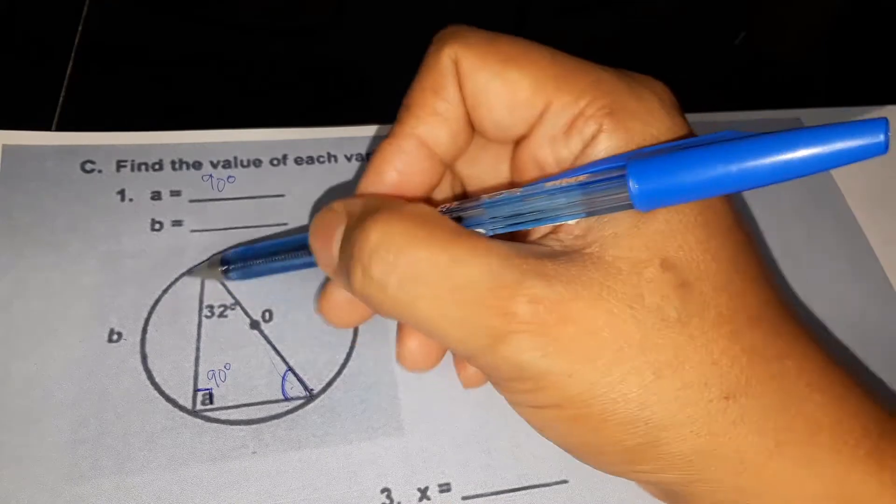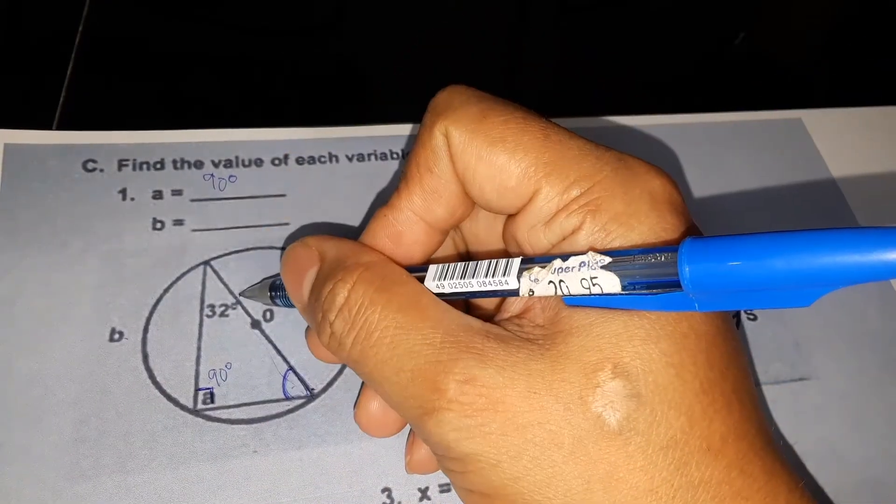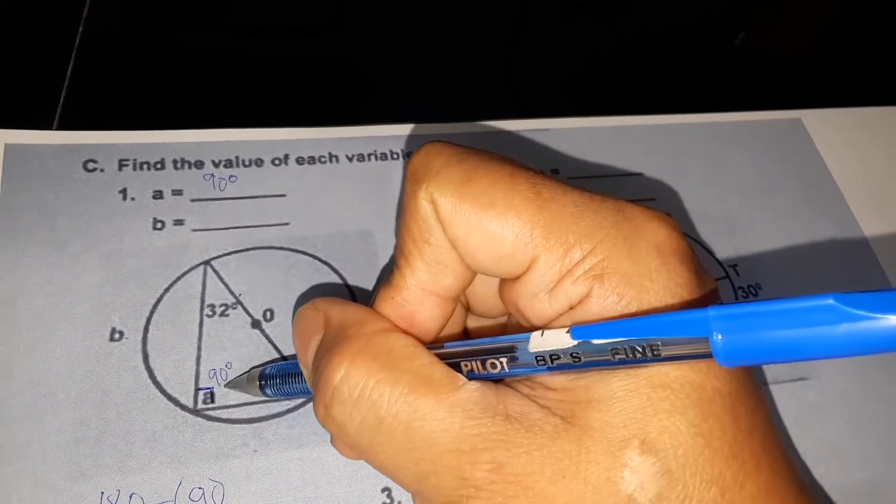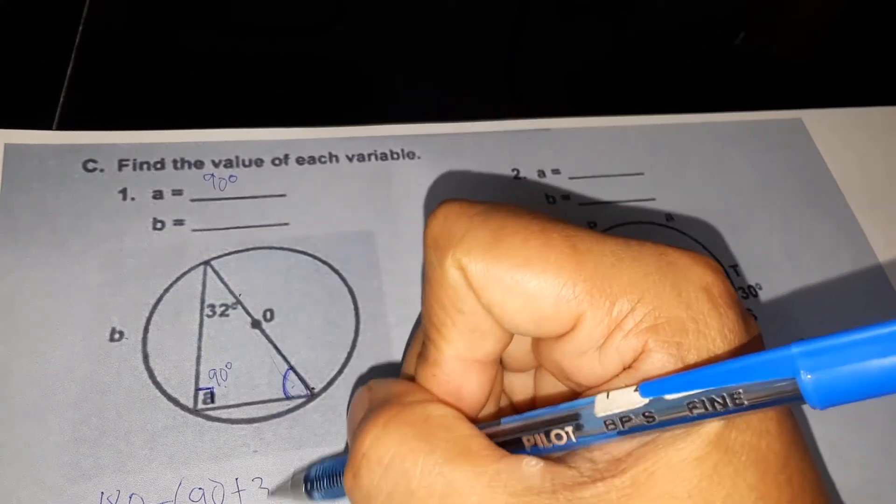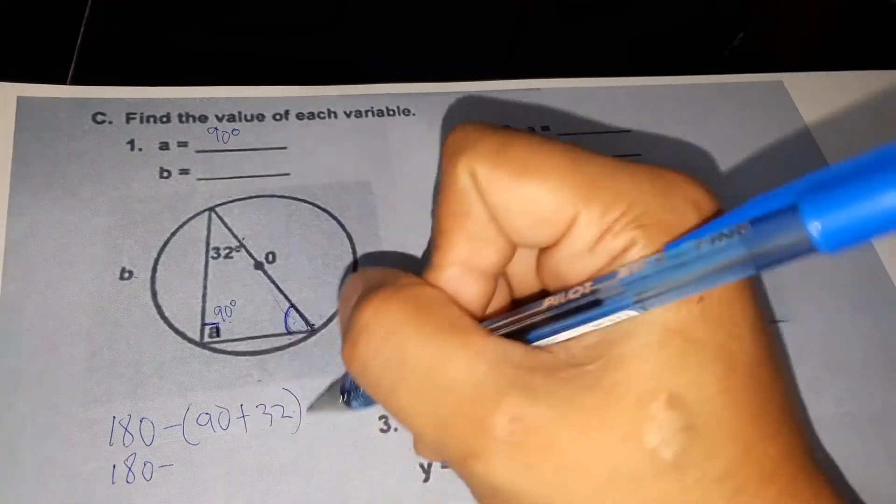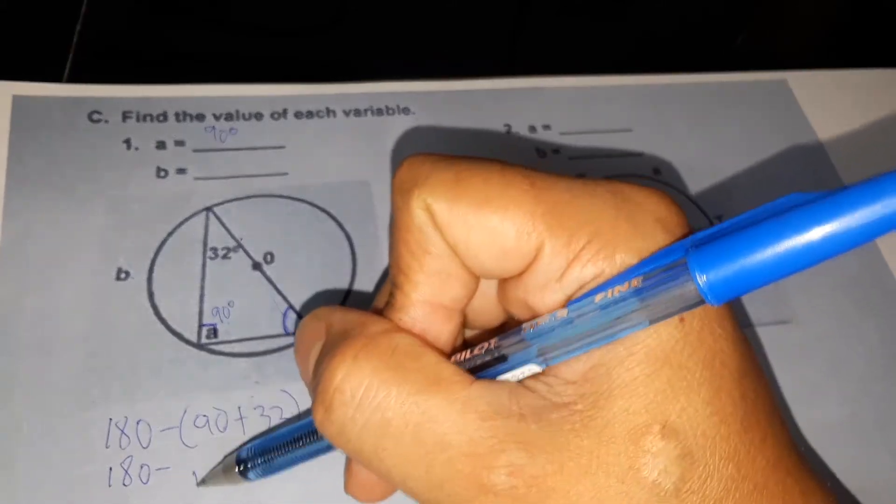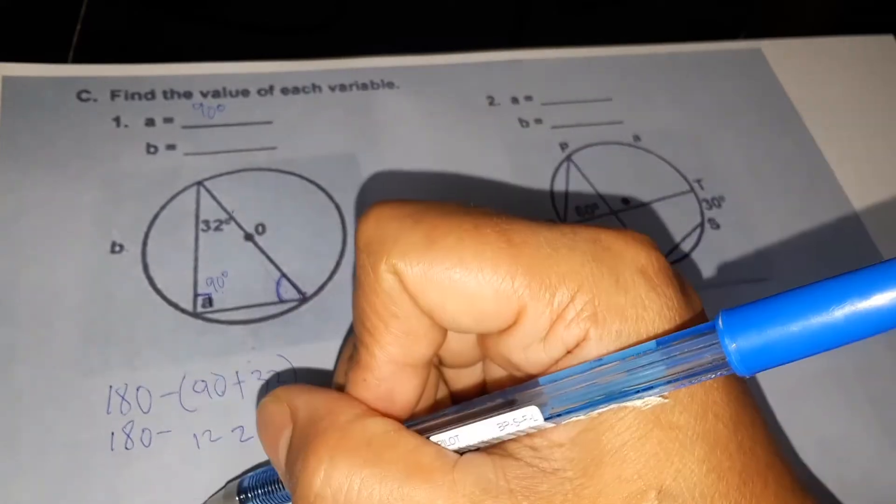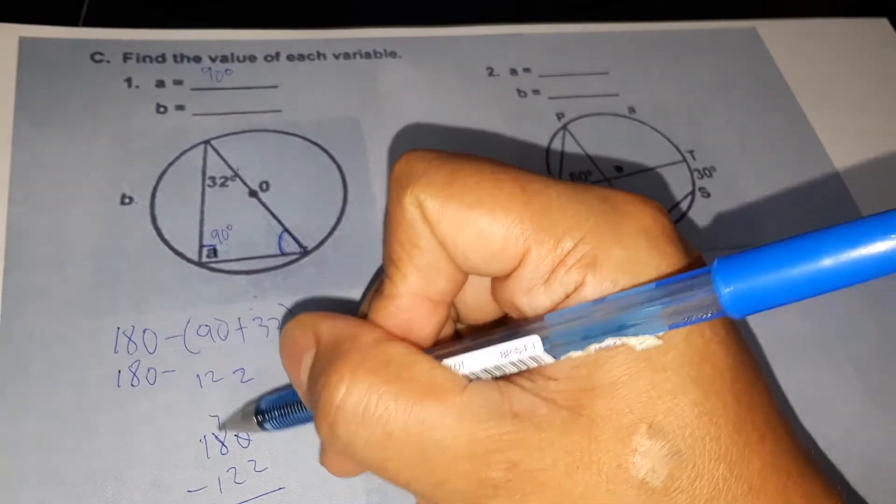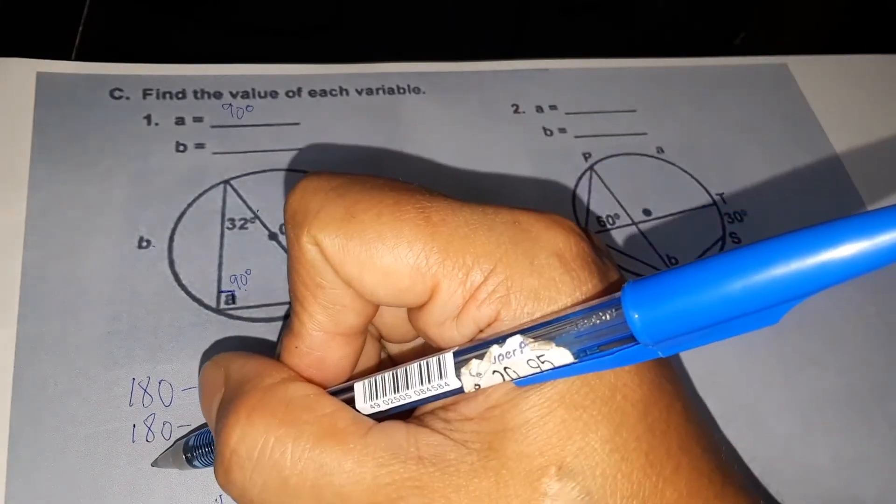Remember that the measurement of a triangle is 180. So 180 minus the given, which is 90 plus 32. 180 minus 90 plus 32, we have 180 minus 122, so 10, 7, 10 minus 2 is 8, 7 minus 2 is 5. Therefore we have 58.